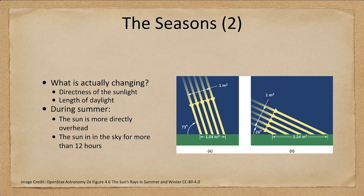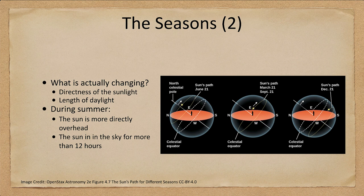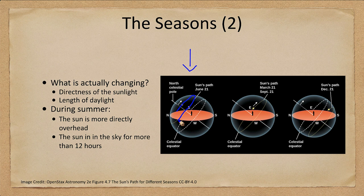That is one of the reasons. The other is that the length of daylight changes — the Sun will spend more time in the sky during the summer. Looking at the path of the Sun on June 21st, for the northern hemisphere the Sun rises north of east, goes up high in the sky, and then comes down and sets north of west. So it spends a very long time in the sky, giving us more than 12 hours of sunlight.